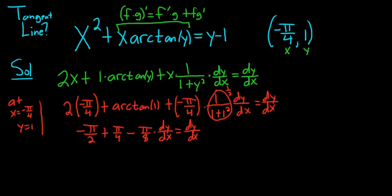Let's see what happens here. We can combine these. You can think of negative pi over 2 as being negative 2 pi over 4. So negative 2 pi over 4 plus pi over 4 is negative pi over 4, minus pi over 8 dy dx, and that's equal to dy dx.